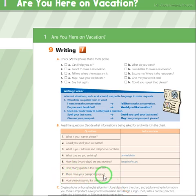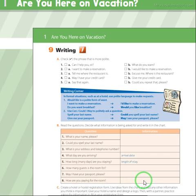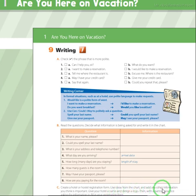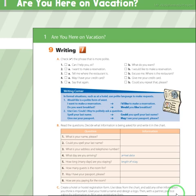'May I have your passport?' — Please provide your travel passport. 'How are you paying for the room?' — Will you pay in cash or by credit card? Finally, create a hotel or hostel reservation form. Use ideas from the chart and add any other information you think is important. Give your hotel a name, design a logo, then write the required information from the chart.